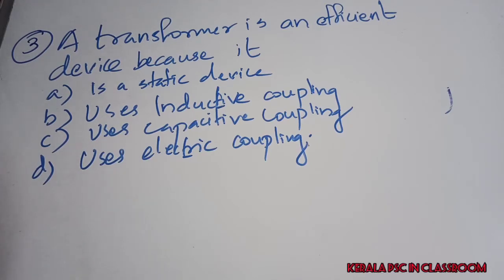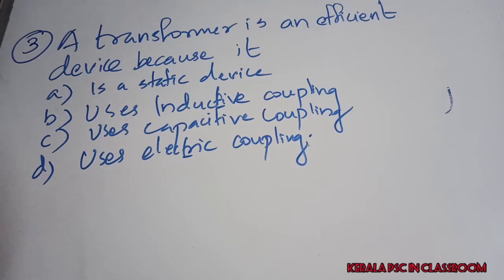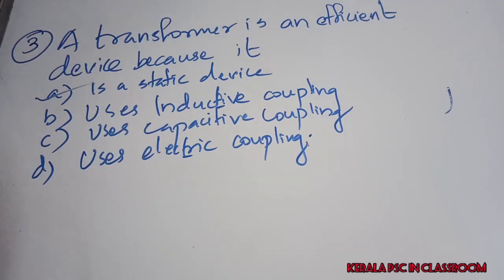Third question: a transformer is an efficient device because — (A) it is a static device, (B) it uses inductive coupling, (C) it uses capacitive coupling, (D) it uses electric coupling. The answer is (A): a transformer is an efficient device because it is a static device — it has no rotating or moving parts, which makes it highly efficient.